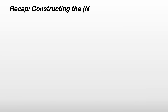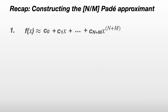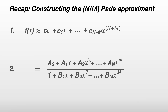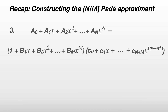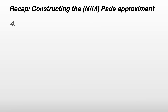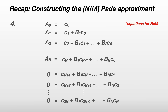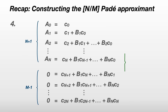To recap: to construct an n over m Padé approximant for a given function, first calculate the Taylor series up to order n plus m. Then equate that to the Padé approximant, with b sub 0 set to 1. Multiply both sides by the denominator, multiply out the brackets, and ignore any terms larger than x to the power n plus m. Equating terms in powers of x gives a set of simultaneous equations — generally the first n plus 1 equations equate terms up to x to the power n with the a's, and the other m equations set higher-order terms to 0. In general, for an n over m Padé approximant there will be n plus m equations and n plus m unknowns.